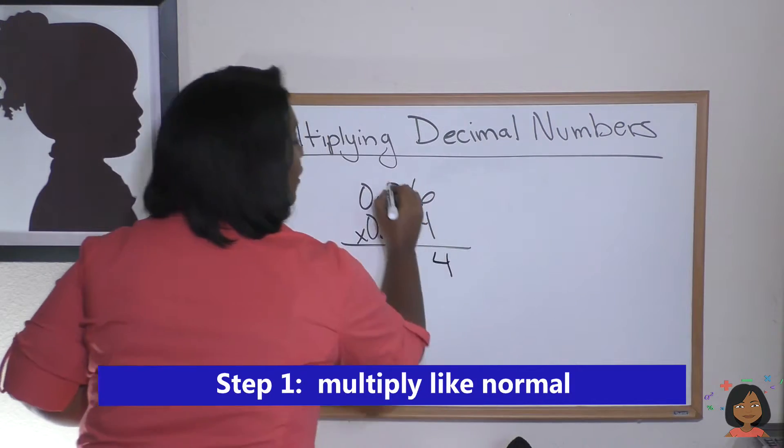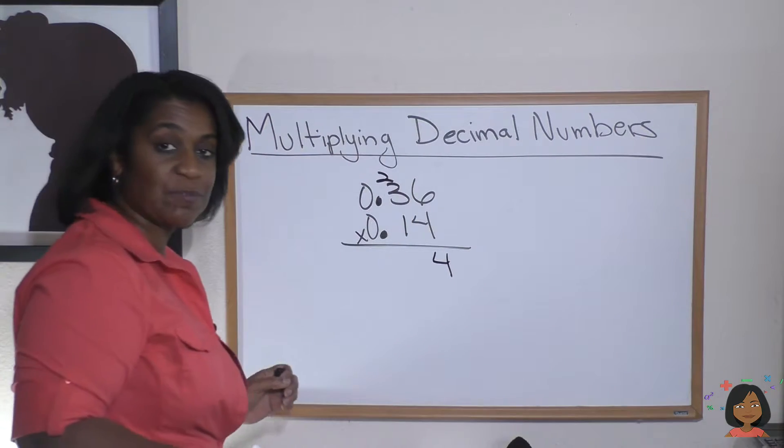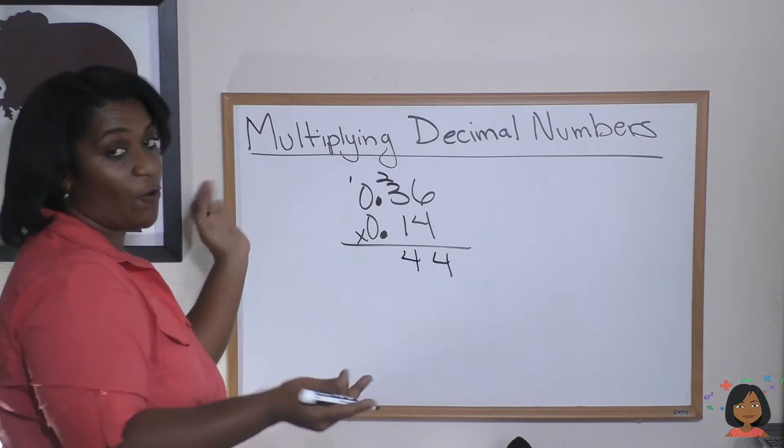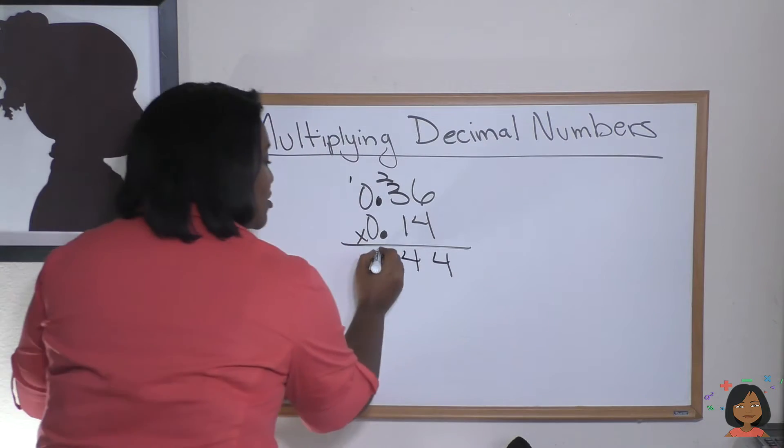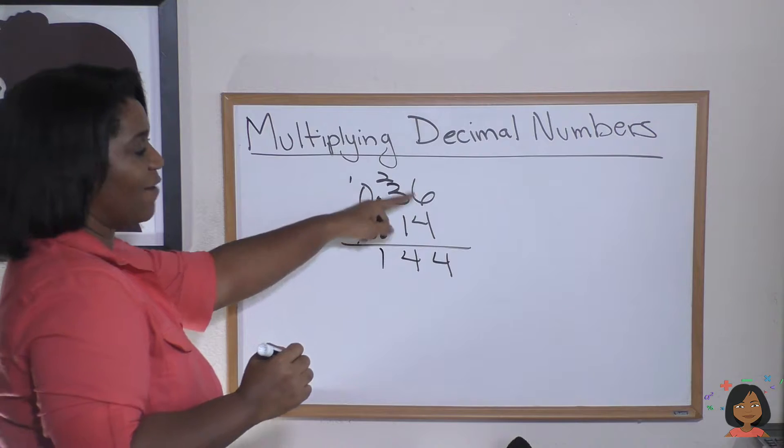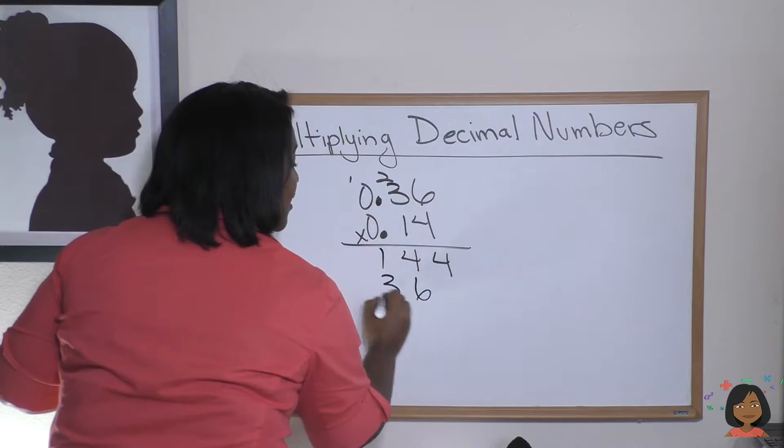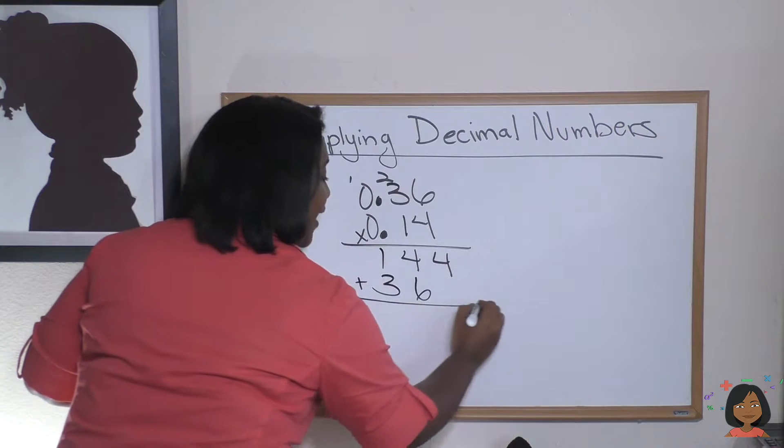Six times four is 24. Carry the two. Four times three is 12 plus two is 14. We can carry the one, but we know four times zero is zero. So we add our one and it's just another one. Now here we have 36 times one. Let's just make sure we line it up. We know it's going to be 36.